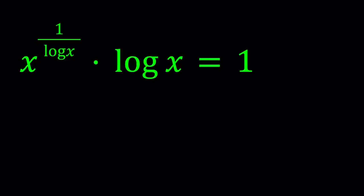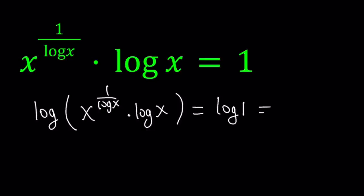Let's go ahead and log both sides. So I'm going to log the product here, x to the power 1 over log x multiplied by log x. And on the right hand side, log 1 is going to be 0.